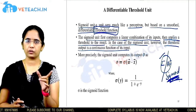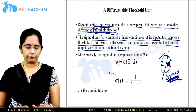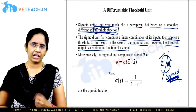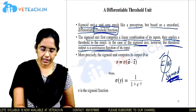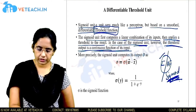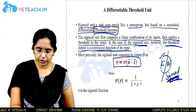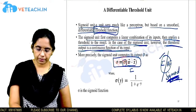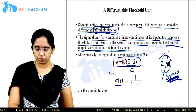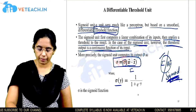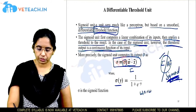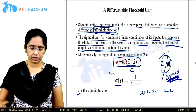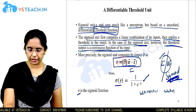In the case of a sigmoid unit, the threshold output is a continuous function of its input. Unlike a perceptron which outputs 1 or -1 (or 1 or 0), the output of a sigmoid function can be any continuous value. The sigmoid function sigma is defined as: σ(y) = 1 / (1 + e^(−y)), where y is the linear combination w1x1 + w2x2 + ... + wmxm. This formula is fixed and must be remembered.